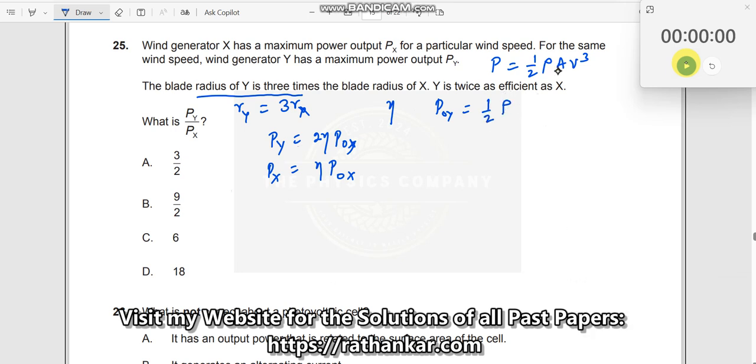Half rho, and what is A here? A Y. What is A Y? If I consider the radius to be R, I can write this as pi RY squared into V cubed. And similarly, P0 X will be half rho pi into RX squared into V cubed.